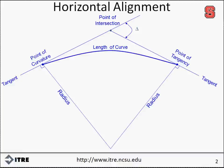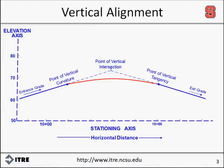In the vertical perspective, a roadway is also comprised of tangents, which are smoothly connected by curves. For vertical alignment, the tangents represent grades, which can either be flat, uphill, or downhill.